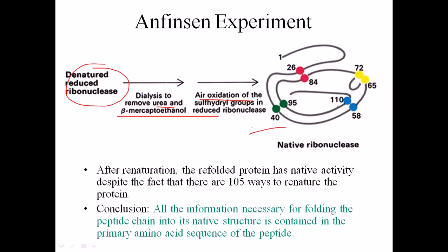The hypothesis was proven right and they obtained native ribonuclease — fully functional, like the original. He disrupted the structure, denatured the protein, then removed the causative agents, and the ribonuclease returned to its active conformation. From this, we can conclude that all the information necessary for protein folding is not incorporated in secondary, tertiary, or quaternary structure, but rather in the primary sequence. It is only dependent on the interactions between amino acids.